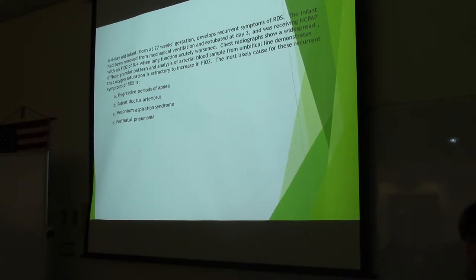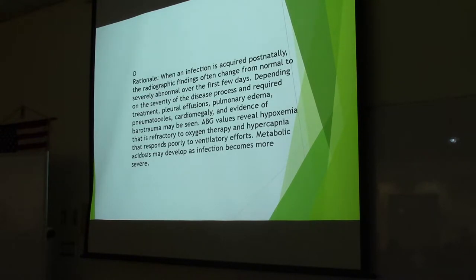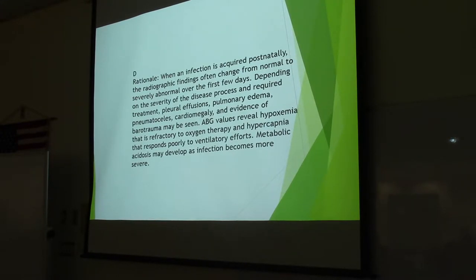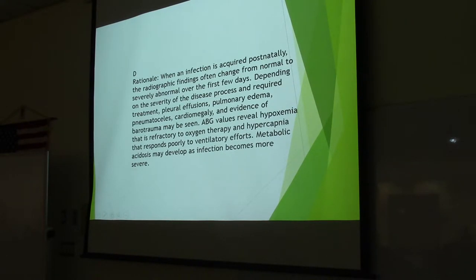With this question, it's D because we know it's not the other three. For neonatal pneumonia, radiographic findings change from normal to severely abnormal over a few days. You can get pleural effusions, pulmonary edema, pneumatoceles, cardiomegaly, and barotrauma. ABGs will show hypoxemia refractory to oxygen therapy and hypercapnia, with obvious respiratory distress.